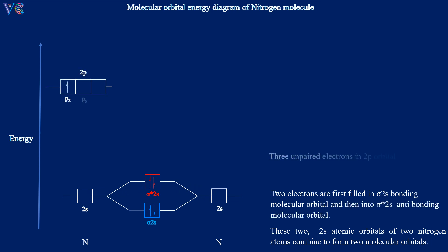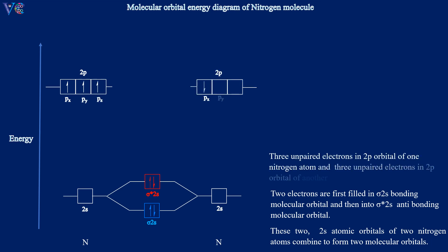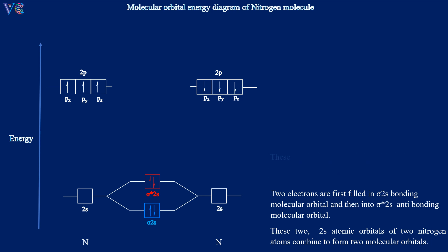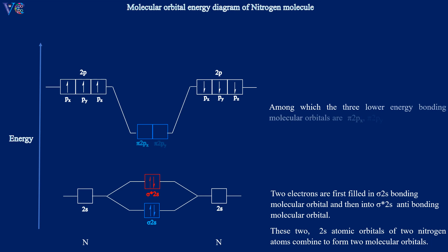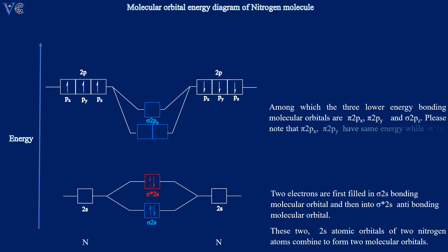Three unpaired electrons in the 2P orbital of one nitrogen atom, and three unpaired electrons in the 2P orbital of another nitrogen atom. These six 2P atomic orbitals of two nitrogen atoms combine to form six molecular orbitals. Among which, the three lower energy bonding molecular orbitals are π2Px, π2Py, and σ2Pz. Please note that π2Px and π2Py have the same energy, while σ2Pz has slightly more energy.